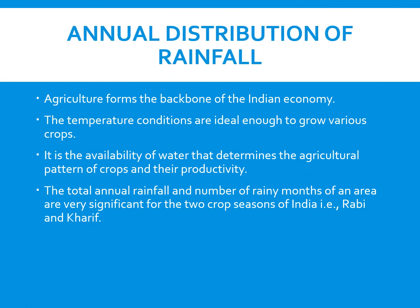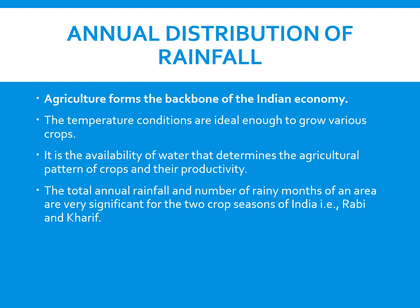Annual distribution of rainfall. Agriculture forms the backbone of the Indian economy where the temperature conditions are ideal enough to grow various crops. It is the availability of water that determines the agricultural pattern of crops and their productivity. Therefore, the total annual rainfall and number of rainy months of an area are very significant for the two crop growing seasons of India — Rabi and Kharif.